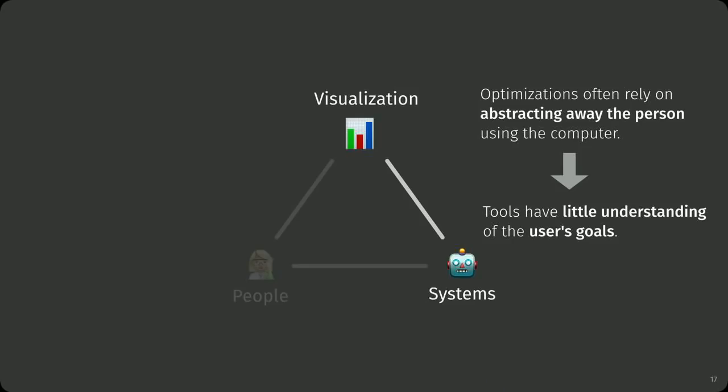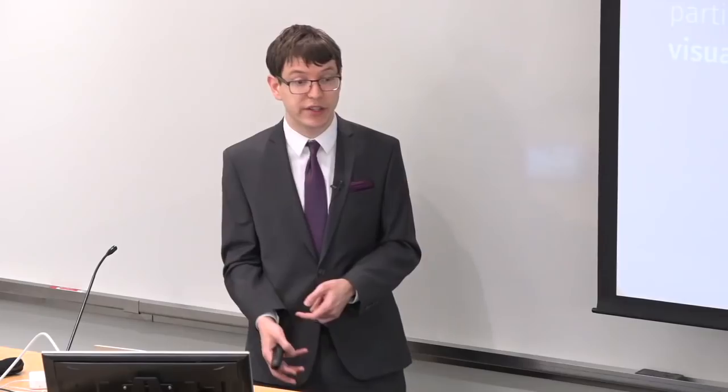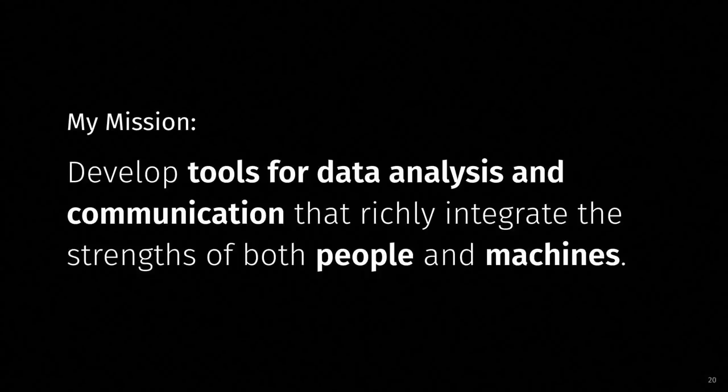Similarly, optimizations to make visualizations scale to large data often rely on abstracting away the details of what the user wants to do, which has been quite successful. But because these tools have very little understanding of the user's goals, we're missing a lot of optimization opportunities. I'm going to show you examples where I leveraged an understanding of people's tasks and capabilities to inform system design. Understanding the user and how they interact with their data has enabled me to discover new optimizations. These two research thrusts have led me to my mission: to develop tools for data analysis and communication that richly integrate the strengths of both people and machines.